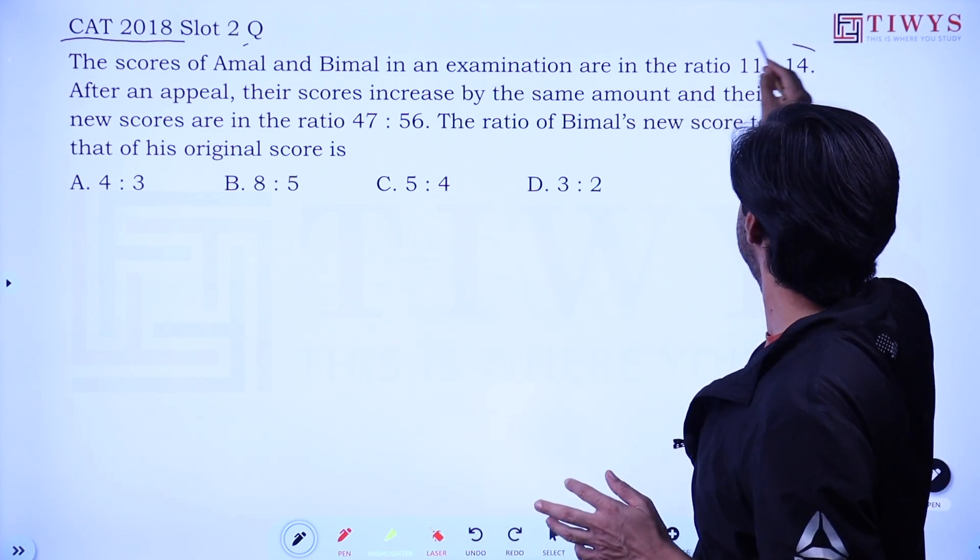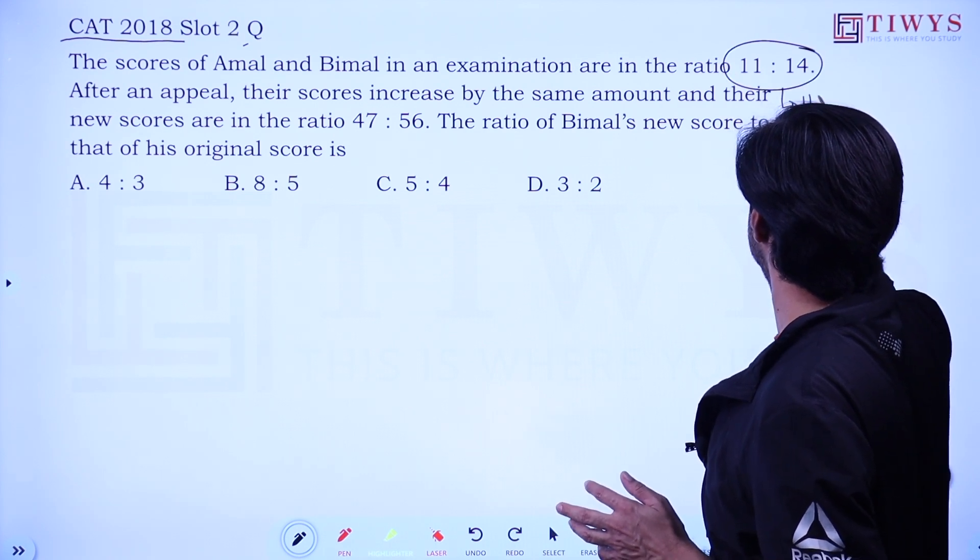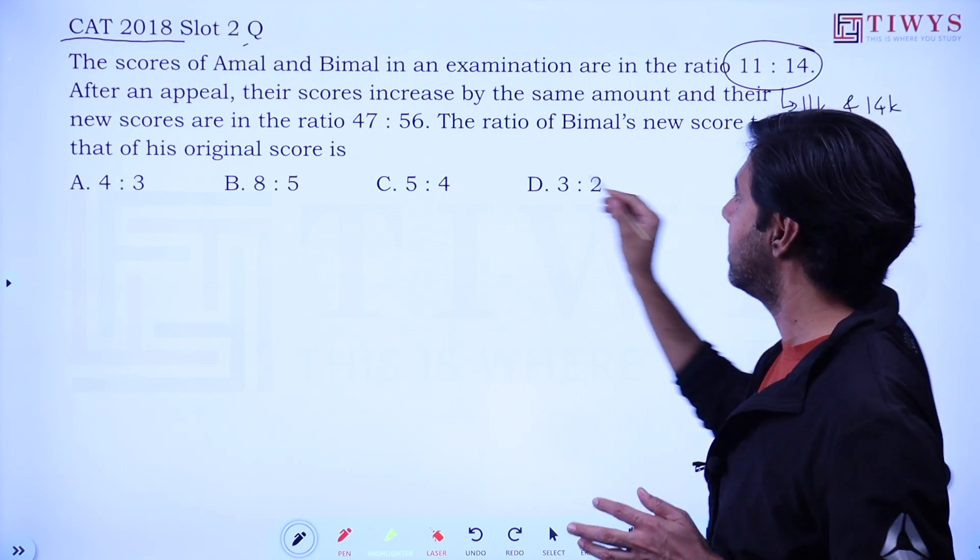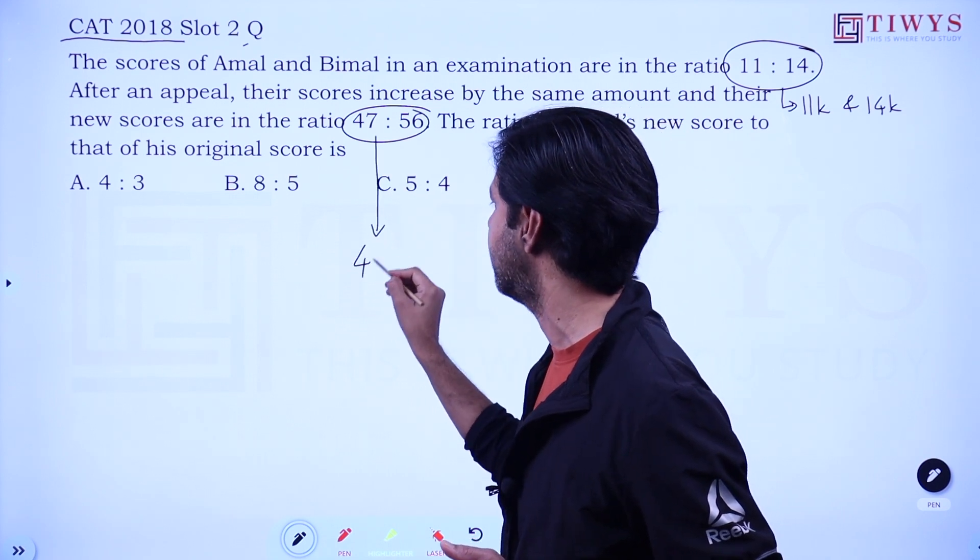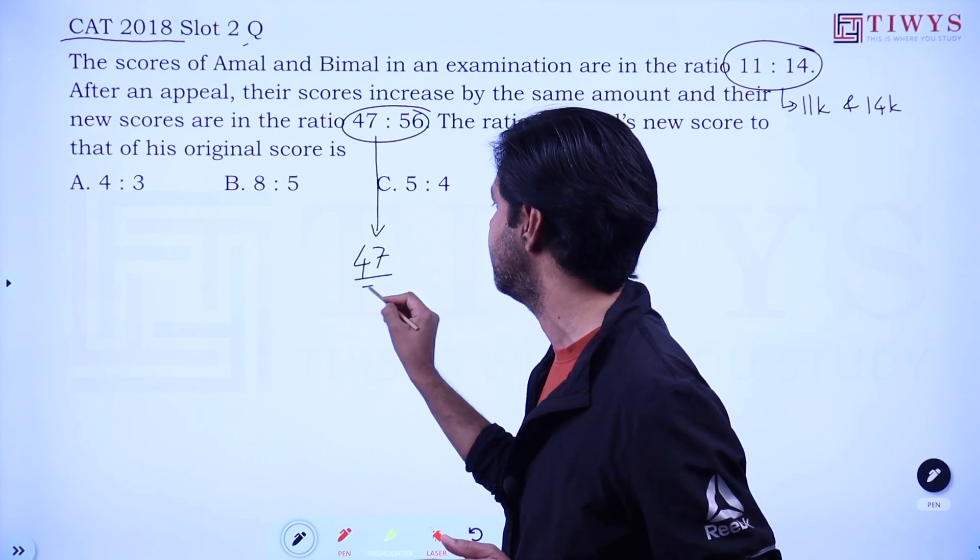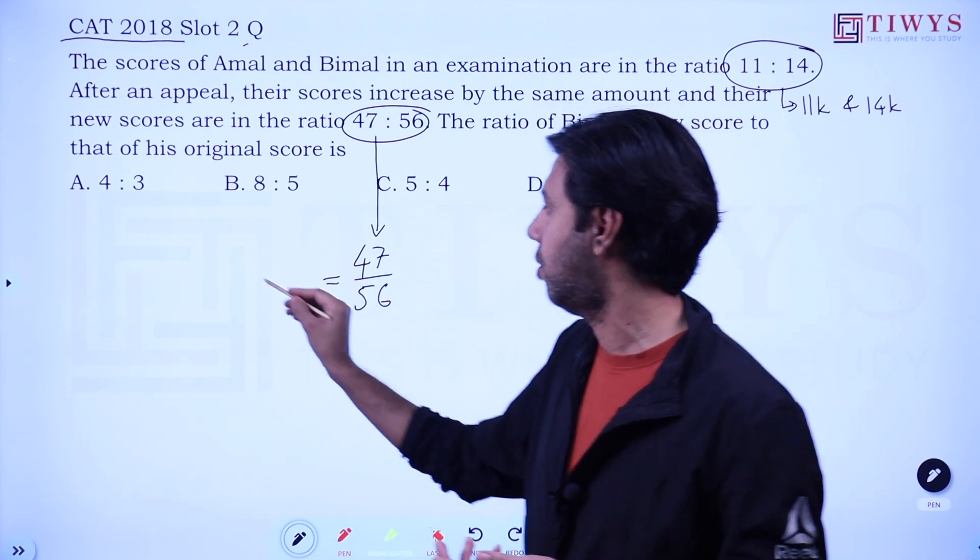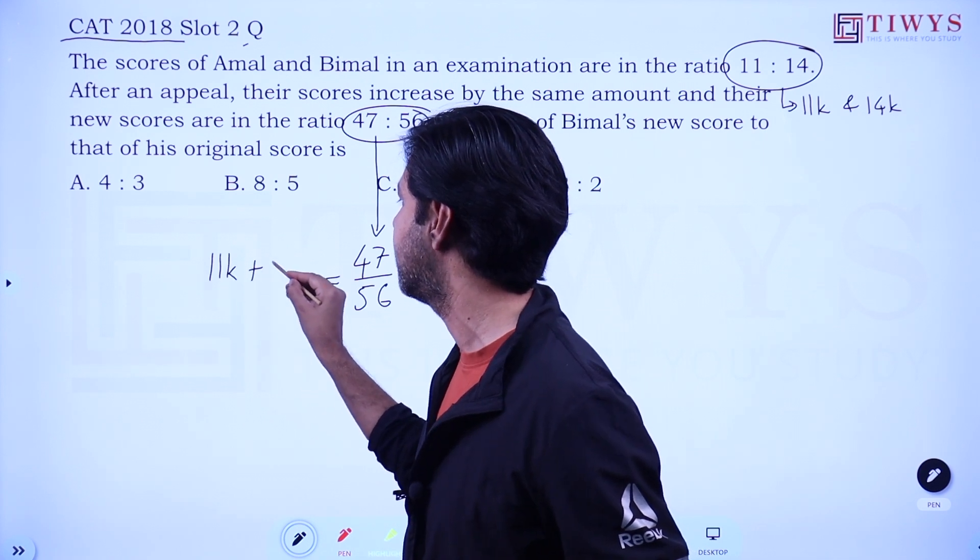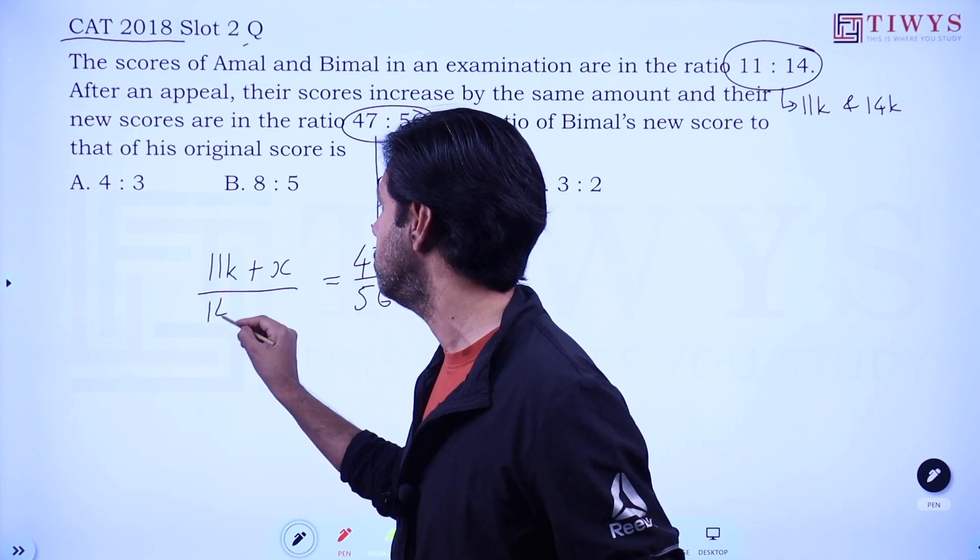So the first ratio, we're going to use a variable and convert it to actual scores: 11k and 14k. And the second ratio we're going to use as it is, in ratio format itself, 47 by 56. So what is 47 by 56? The new scores. And what are the new scores? The old score plus the increase.